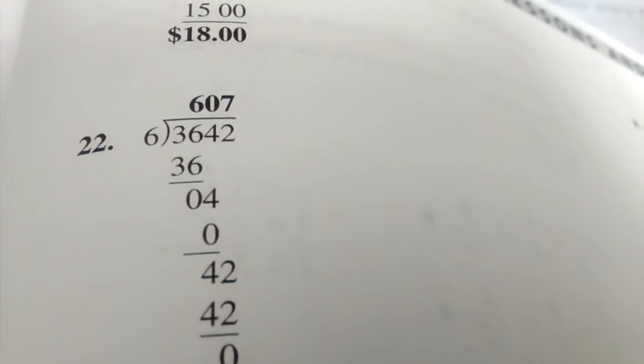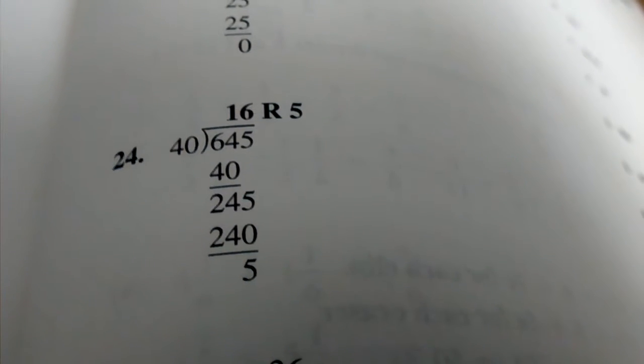Number 22, 607. Number 23, $25. Number 24, 16 remainder 5. Number 25, M equals 12.